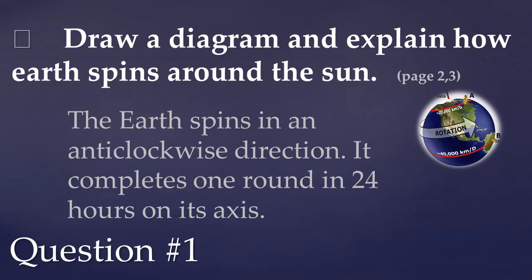It is day in that part of the Earth which faces the Sun, and it is night on the other side that faces away from the Sun. The Earth's spinning anti-clockwise on its axis — we call it rotation — and it takes 24 hours. This is how our day and night is completed.